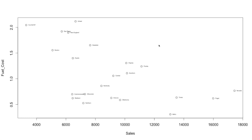Now you can see there are four companies with high sales but low fuel cost, a group of companies in the middle with medium sales and medium to lower fuel cost, and companies with lower sales and higher fuel cost. Broadly, we can see three clusters, but these are based on only two variables.